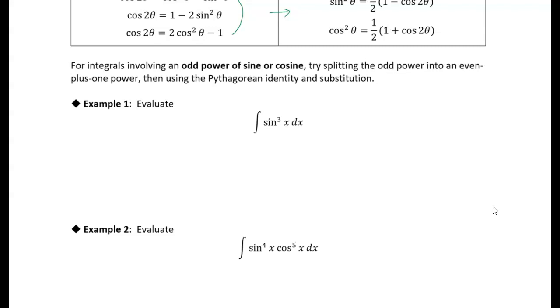So you have an odd function and you're going to split it into an even power of a function times something to the power of one, and then use the Pythagorean identity and substitution. So let's just dive in and do it because I think it would make more sense to see it done than have me explain it. All right, so we're going to take this sine cubed.